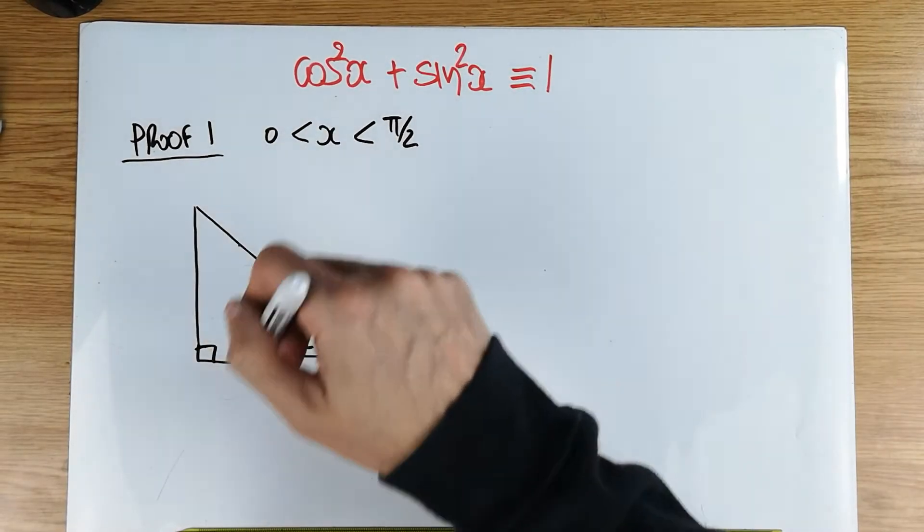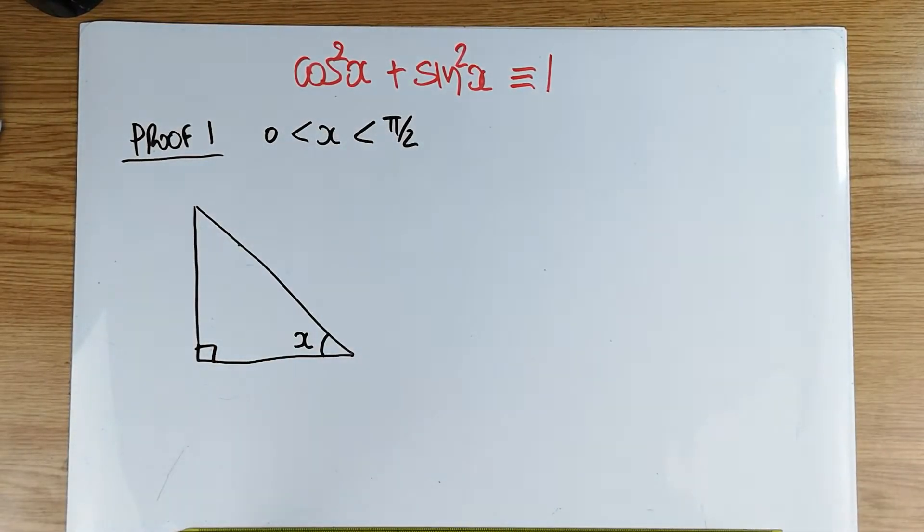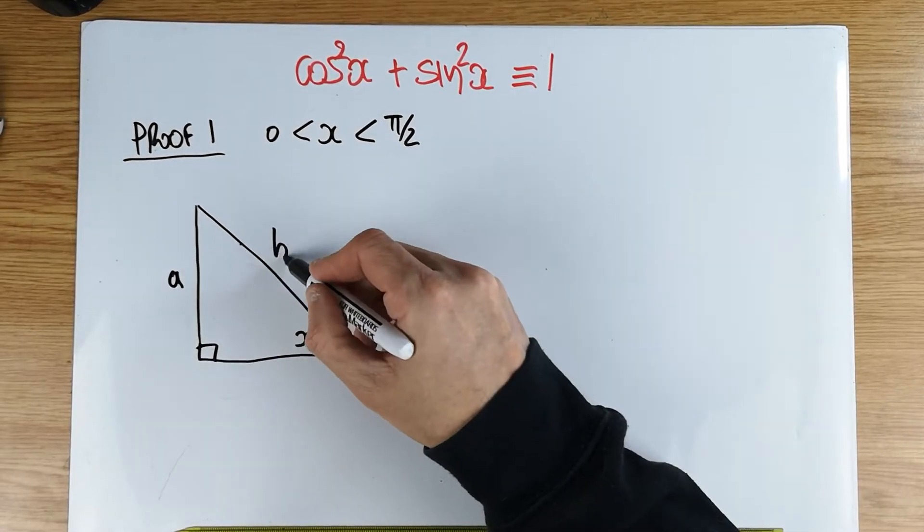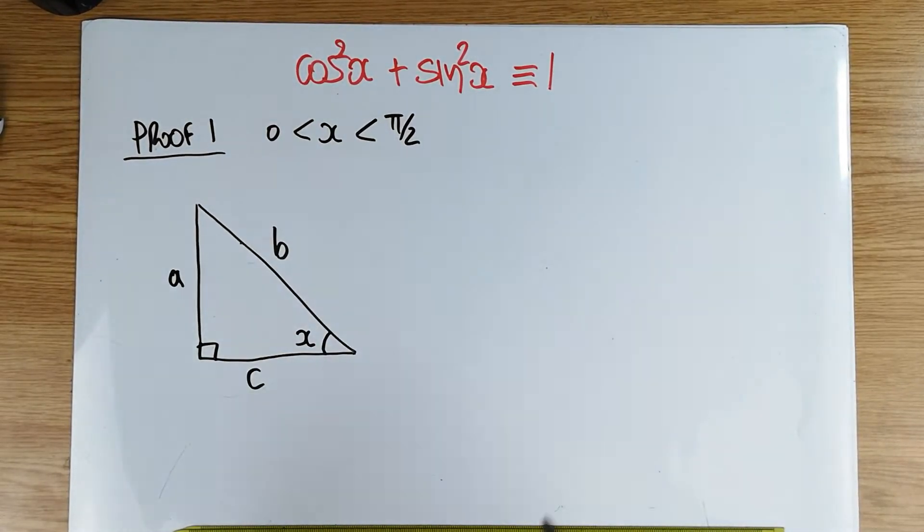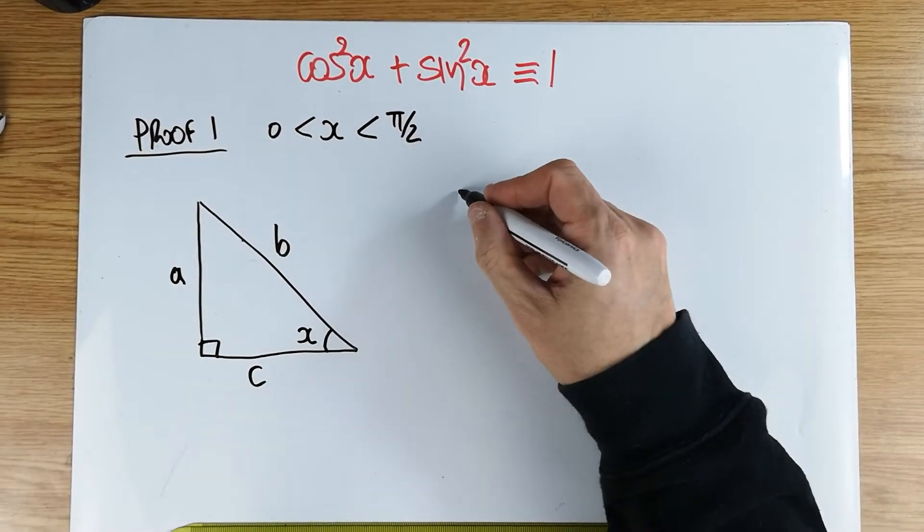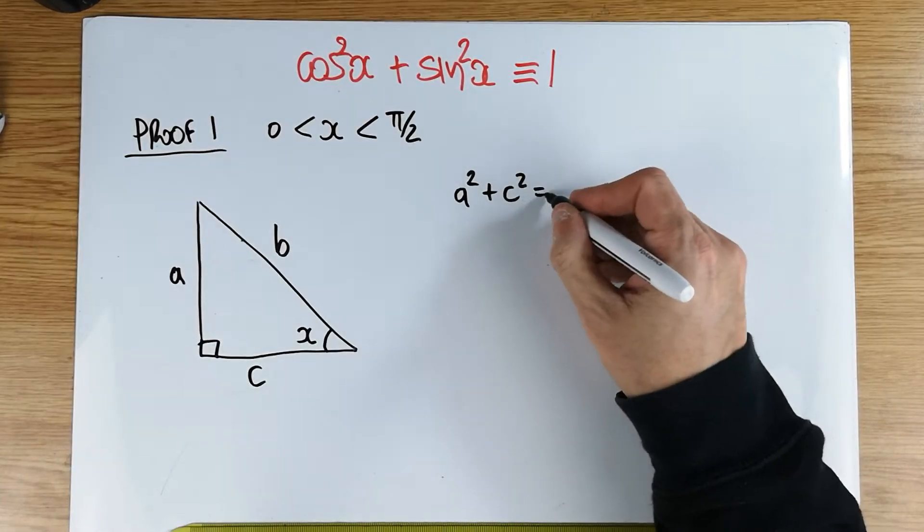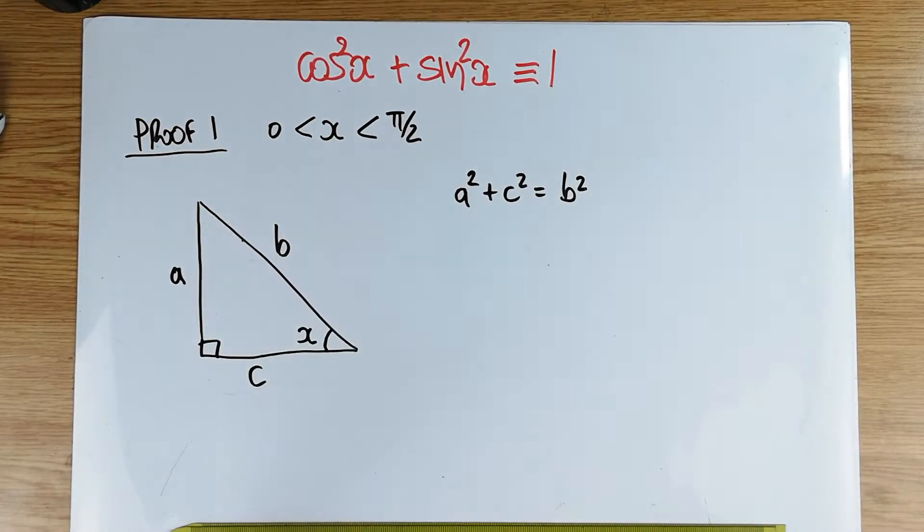And then we label the three sides in whatever way we want, like an ABC kind of scenario. So there's my a, there's my b, and there's my c. So quite clearly, by the Pythagorean relationship, a squared plus c squared must be equal to b squared in this particular triangle.